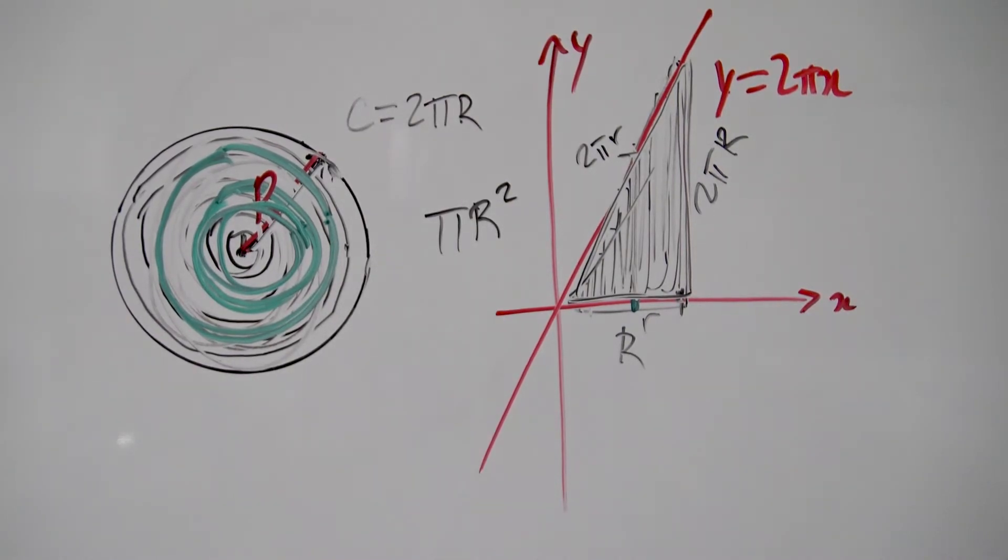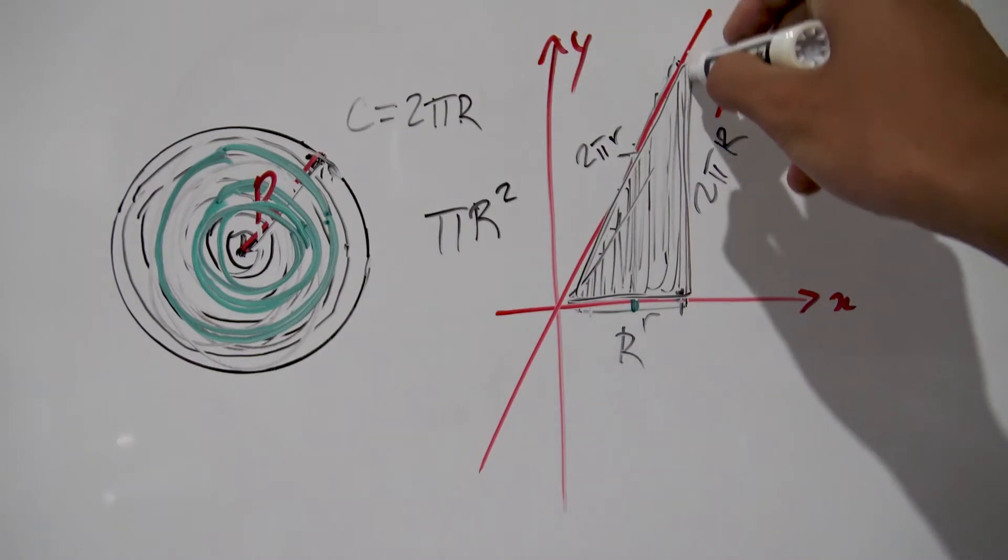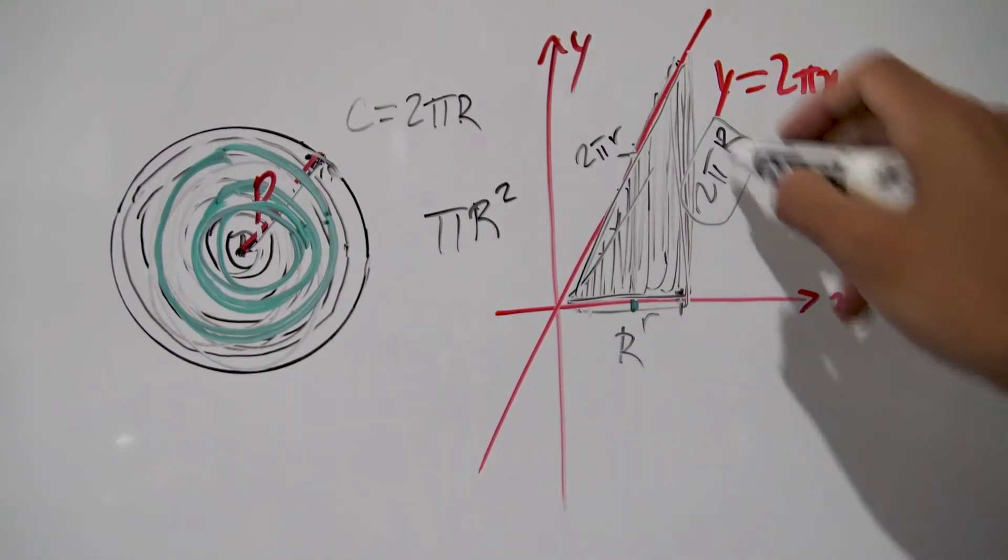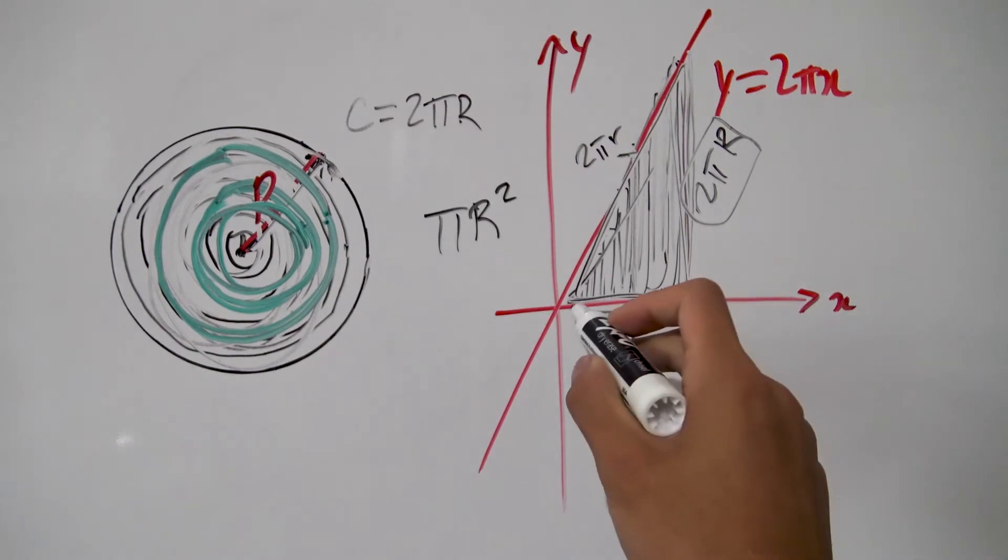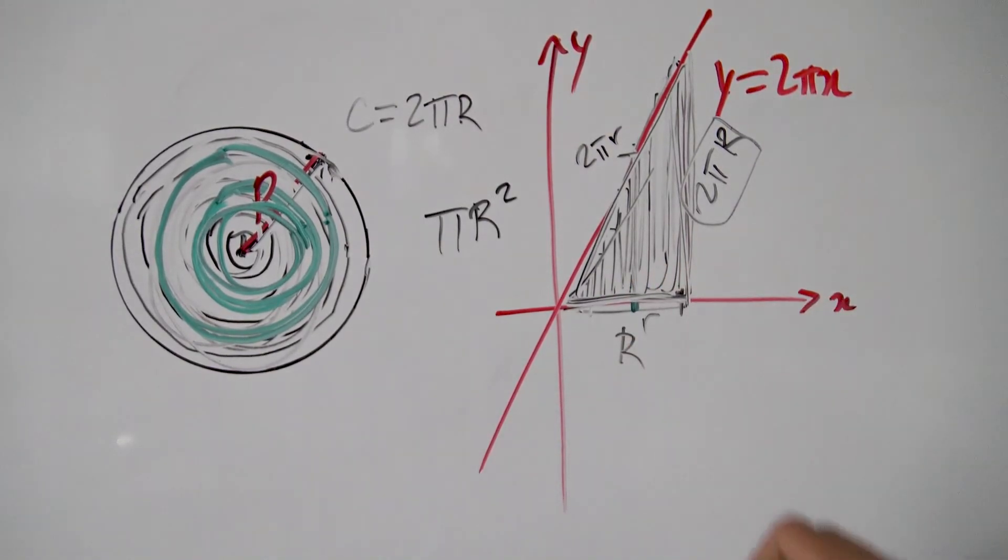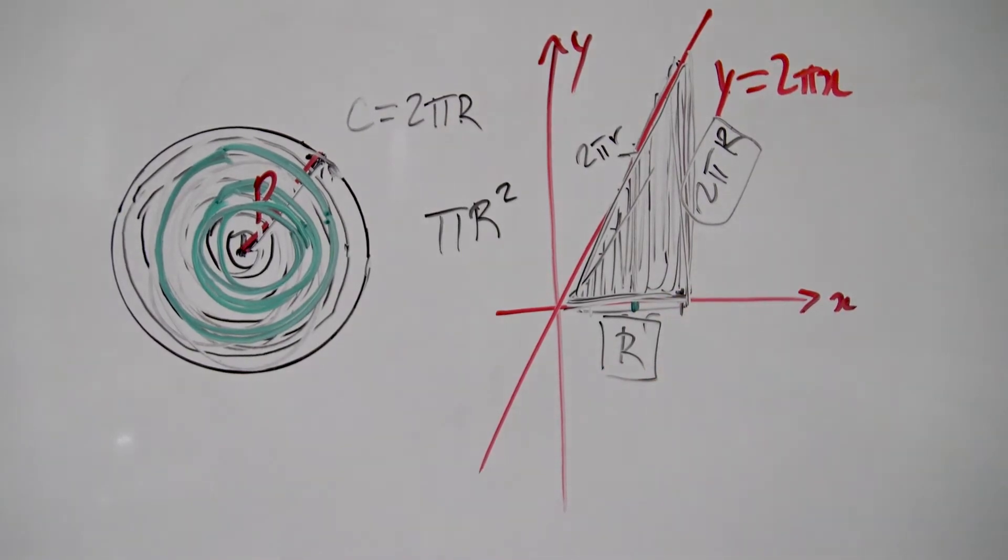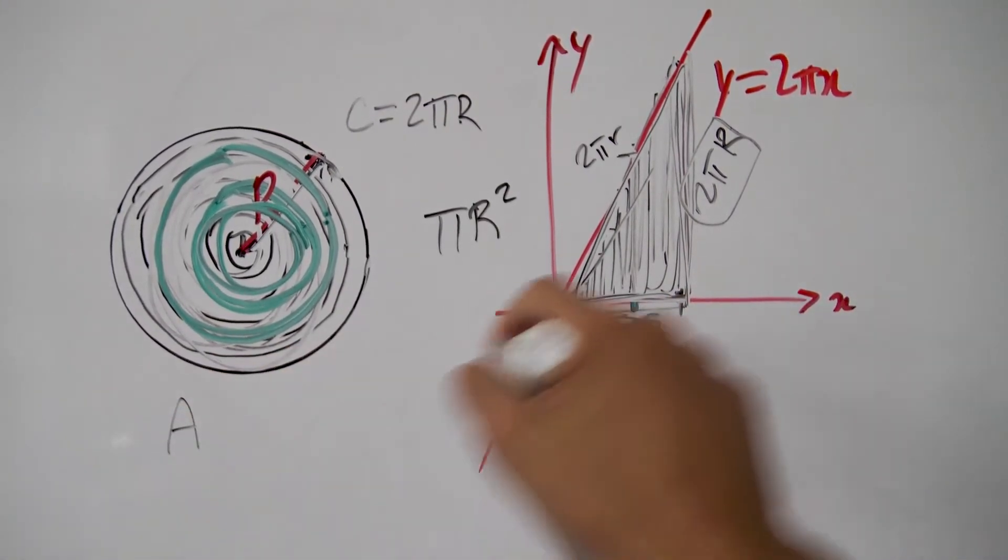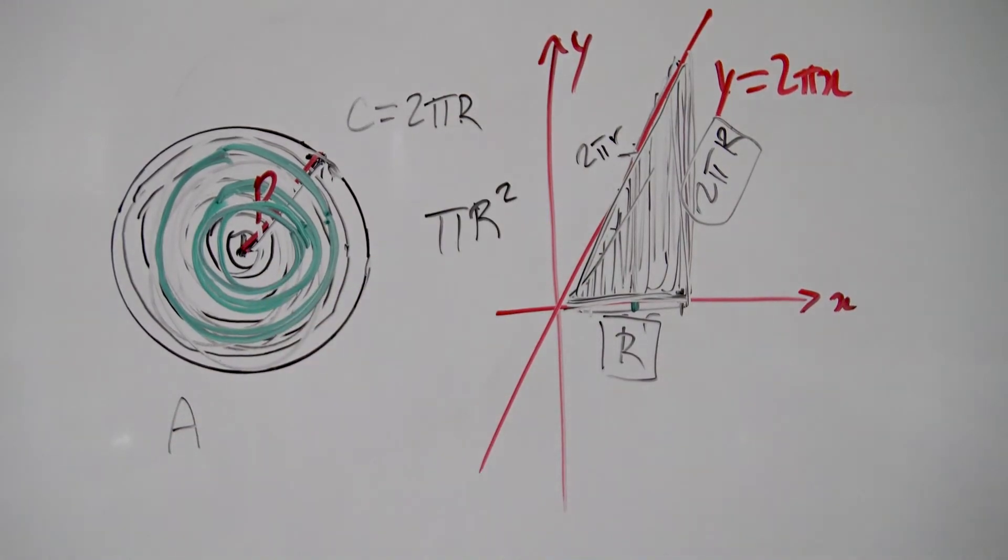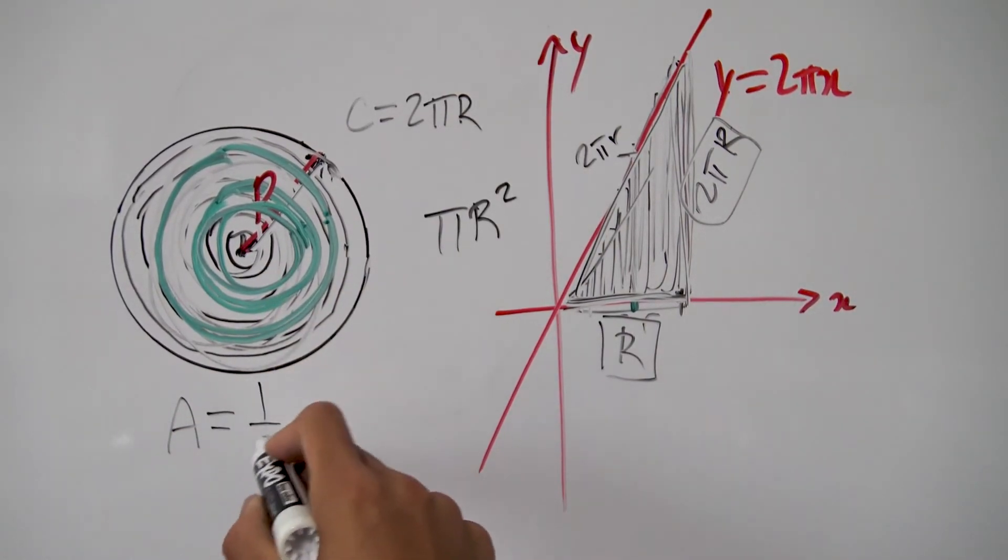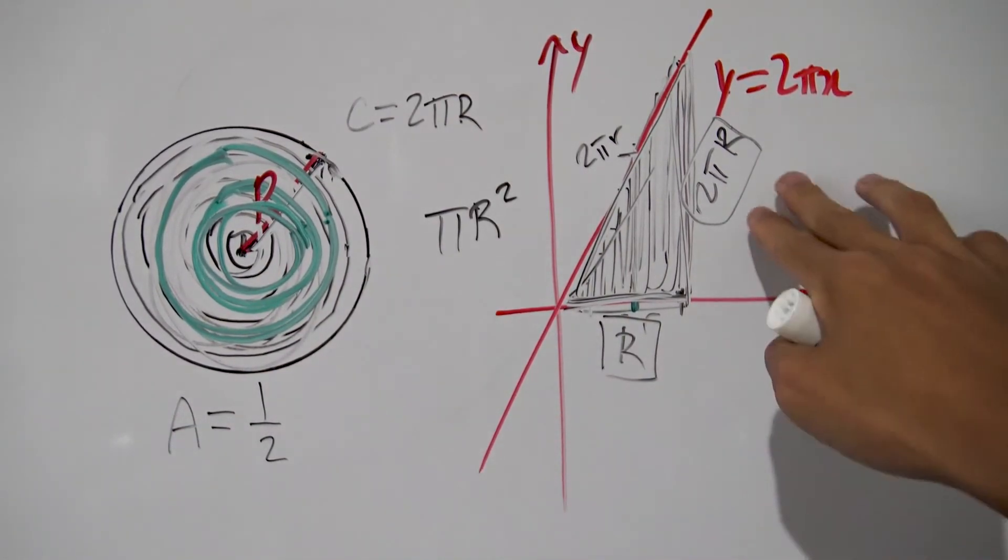So we know the dimensions of our triangle, the height is exactly this length right here which we found was 2 pi r. And our width or the base of our triangle is nothing but the radius of our circle which is r. So the area of our triangle which is the same thing as the area of our circle is nothing but half times the base times the height.